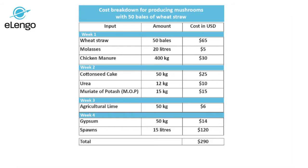The next component is the spawn, or seeds that you require for planting — fifteen liters at a cost of one hundred and twenty dollars.